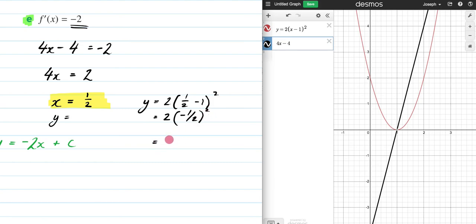This is going to become 1/4. And then this is going to become a half. So that means this too is going to be a half. So y is going to be equal to 1/2.